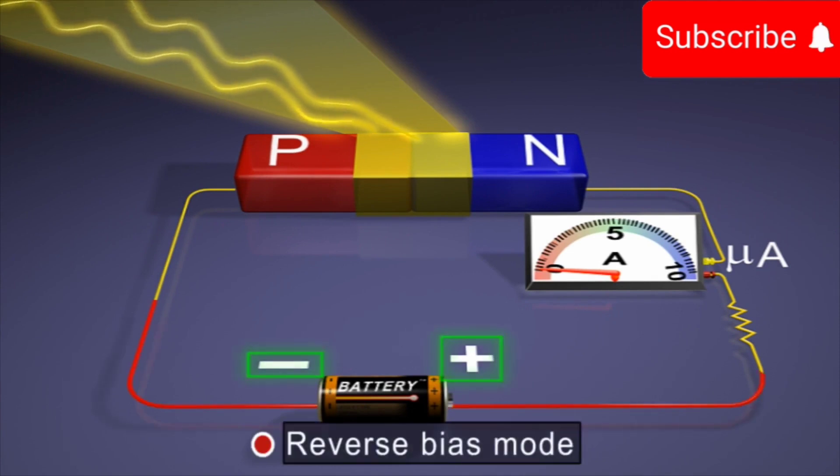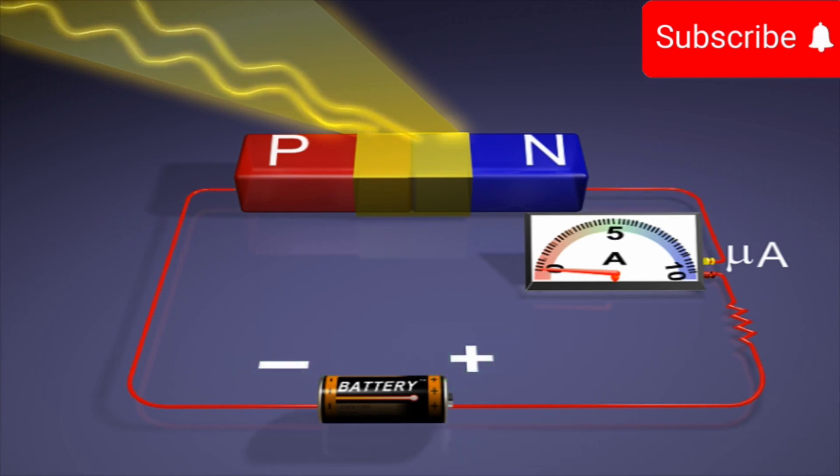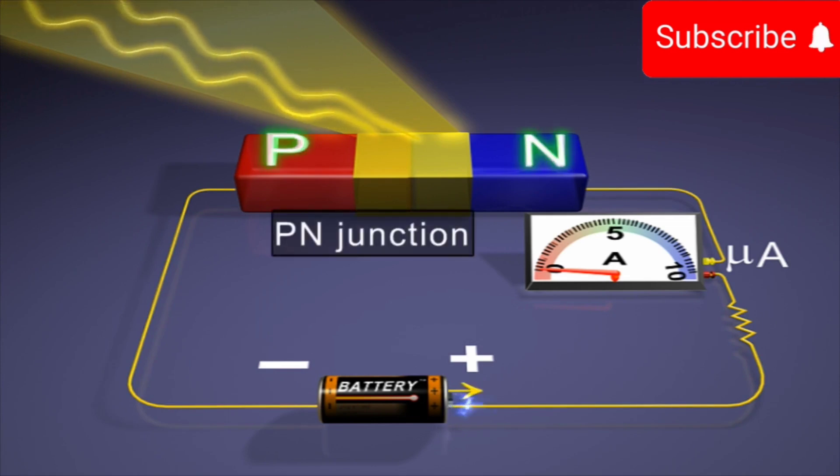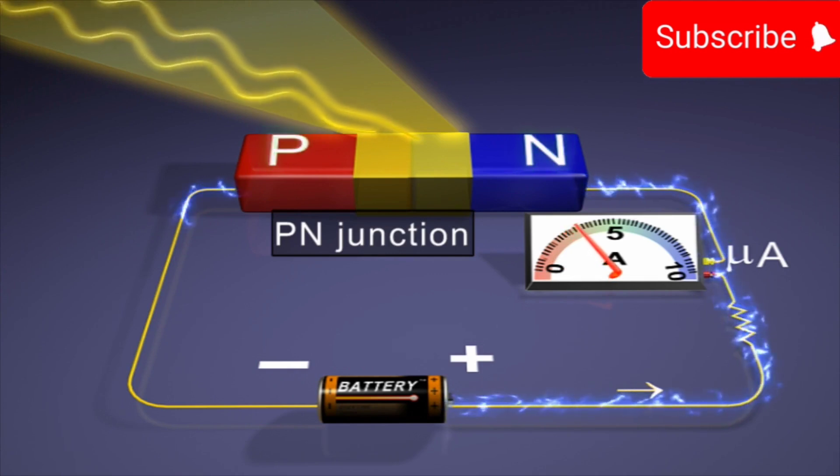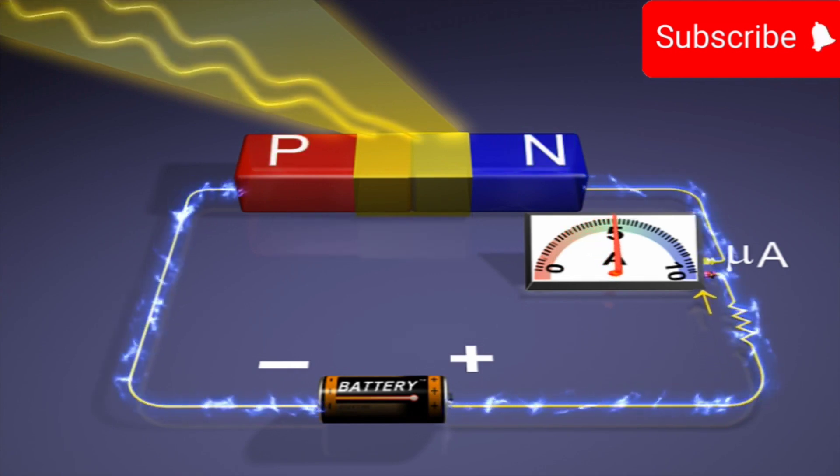This diode is always connected in a reverse bias mode. Reverse saturation current flows through the PN junction diode on connecting it in a reverse bias mode.